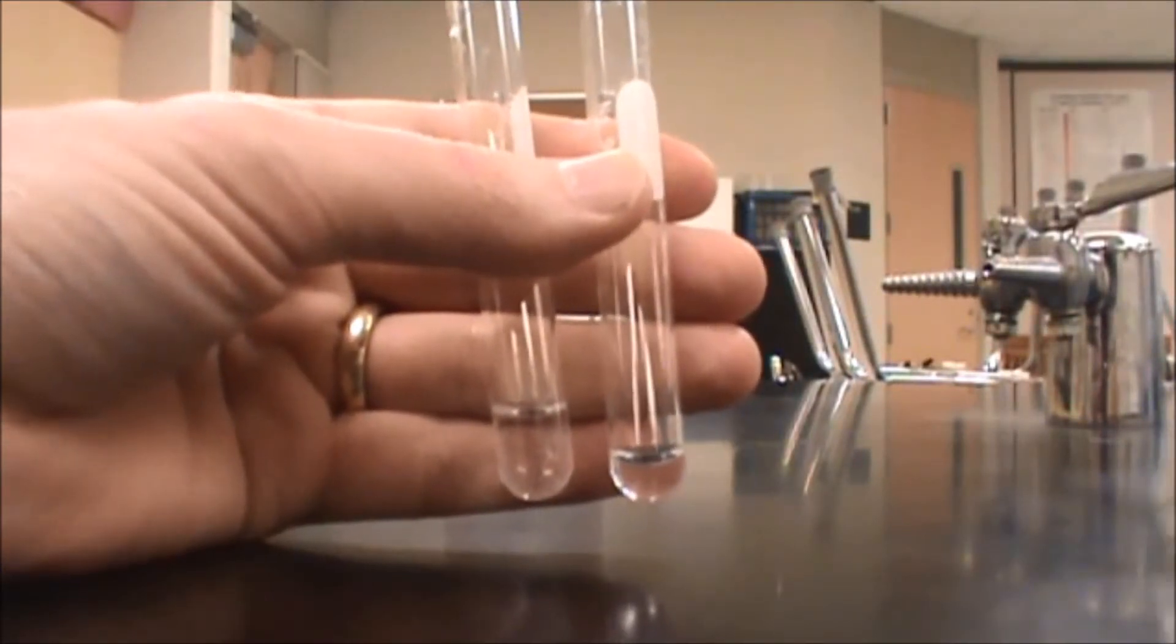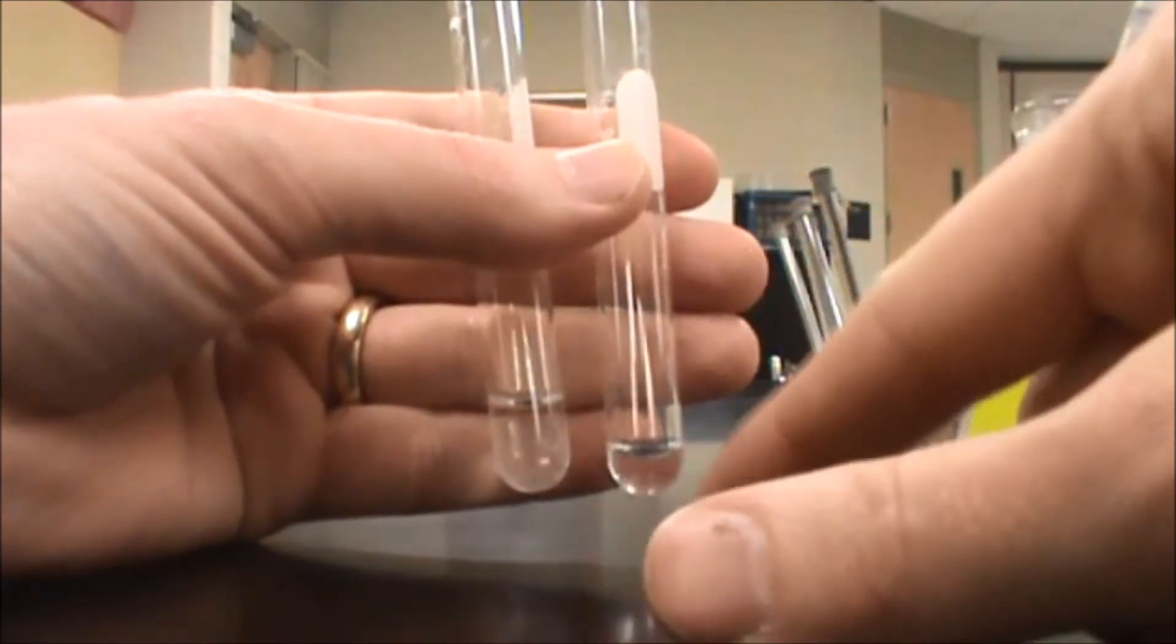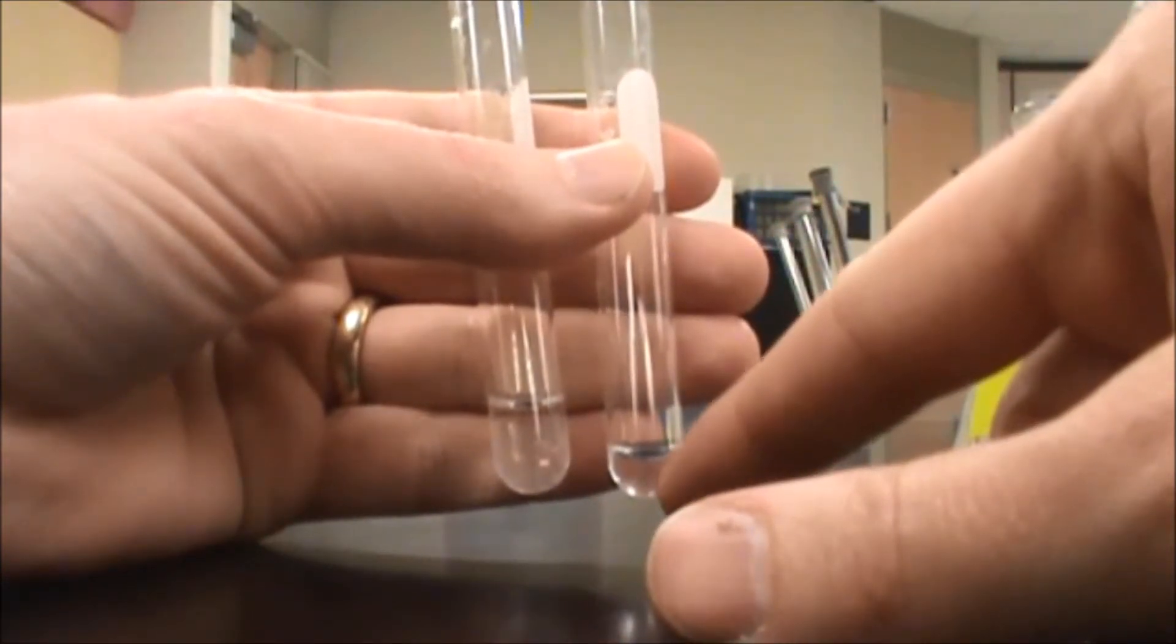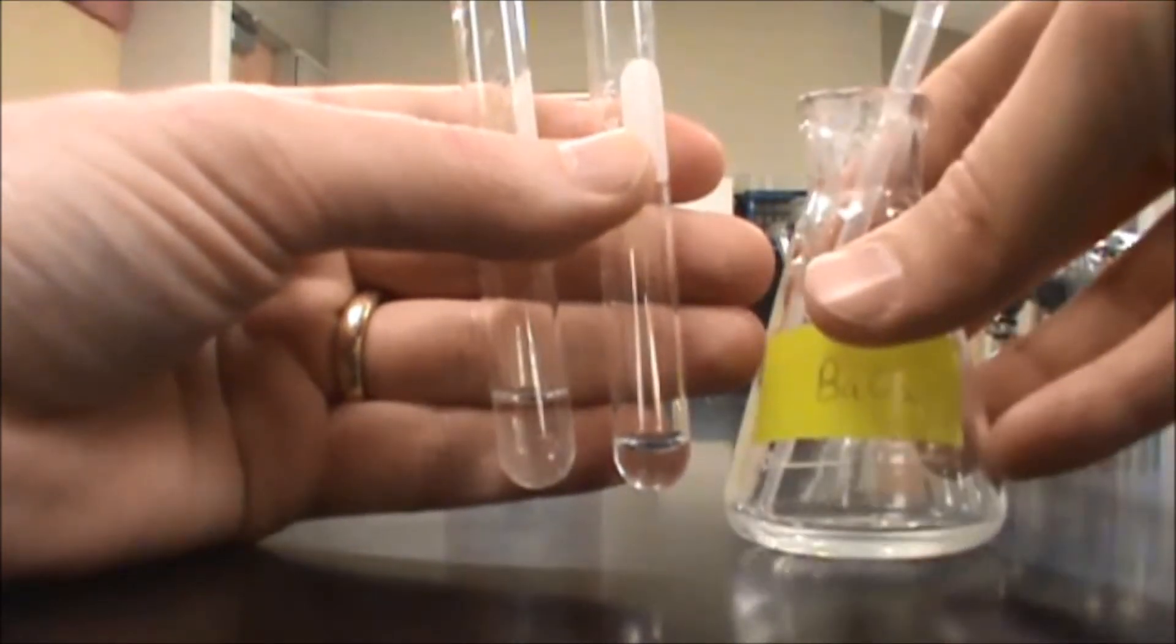Here I'm going to show you how to do the sulfate test. So what I've done is I've put some aluminum sulfate into here, and this is my unknown. In this case I think I used carbonate for my unknown, and I'm going to add barium chloride to each.